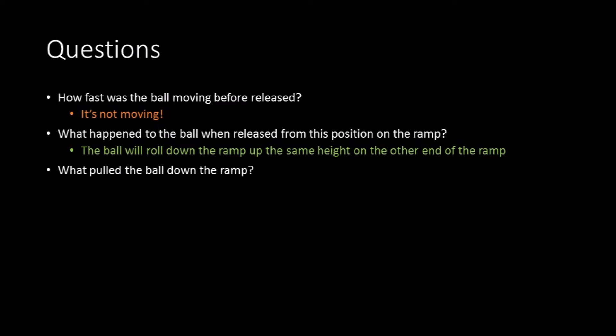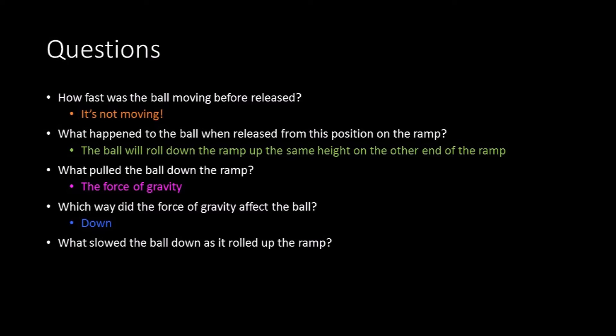What pulls the ball back down the ramp? The force of gravity pulls it back down the ramp. Which way is the force of gravity acting on the ball? The force of gravity is acting downward. What slows the ball down as it rolls up the ramp? The force of gravity slows down the ball. We can therefore state that the force of gravity affected the speed of the ball.